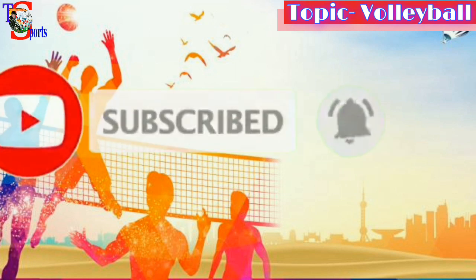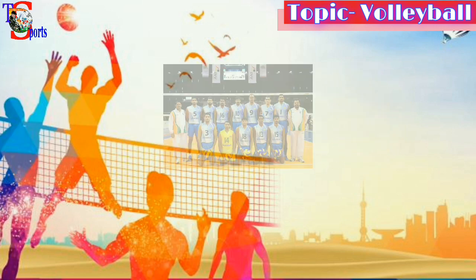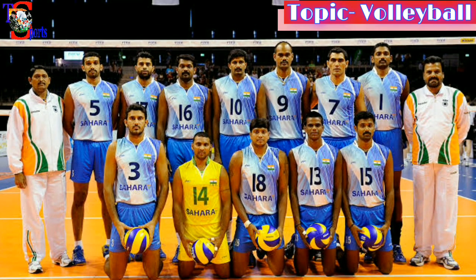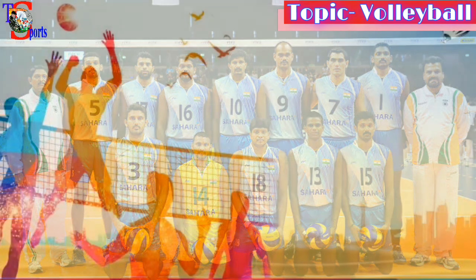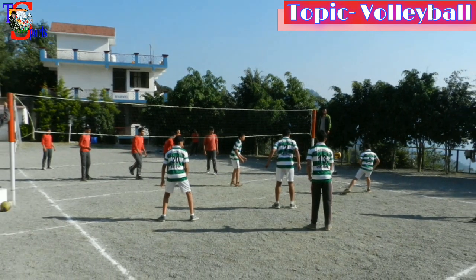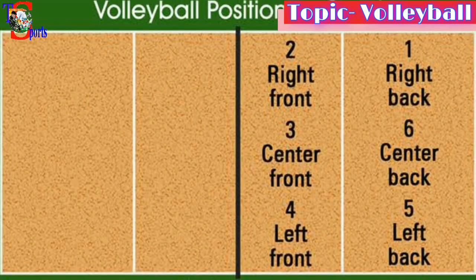Now the basic rules of volleyball: there are 12 players in a team, but only six players can play at a time — six playing and six substitutes. On the court, three players are in the front row (front zone) and three players are in the back row (back zone).